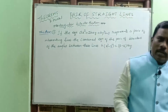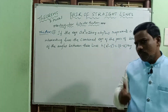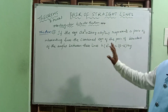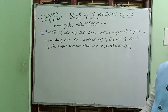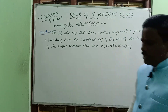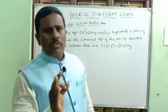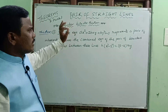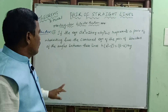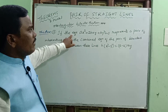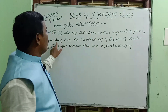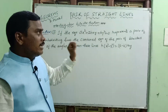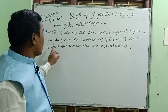Hi, welcome to my channel. Today, a very important theorem — the third theorem on pair of straight lines. It is the angular bisector theorem: if the equation represents a pair of intersecting lines, the combined equation of the pair of bisectors of the angle between them.